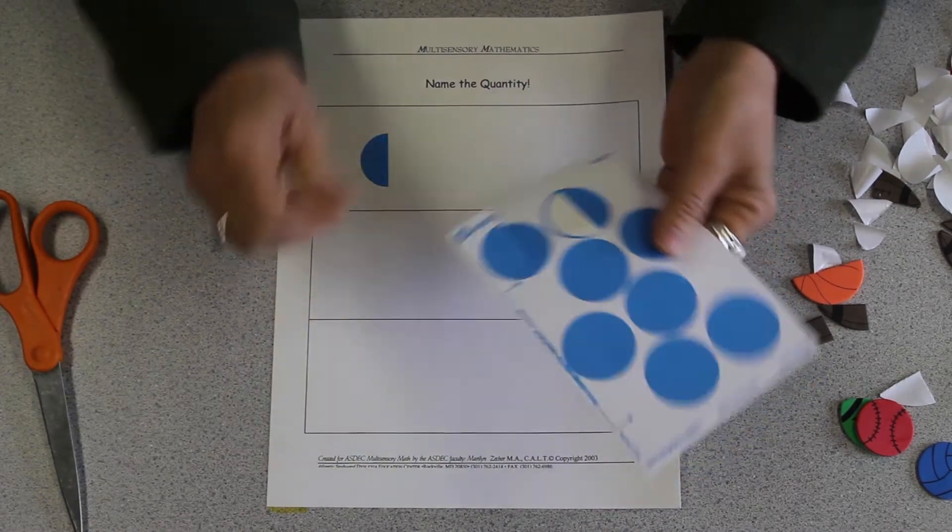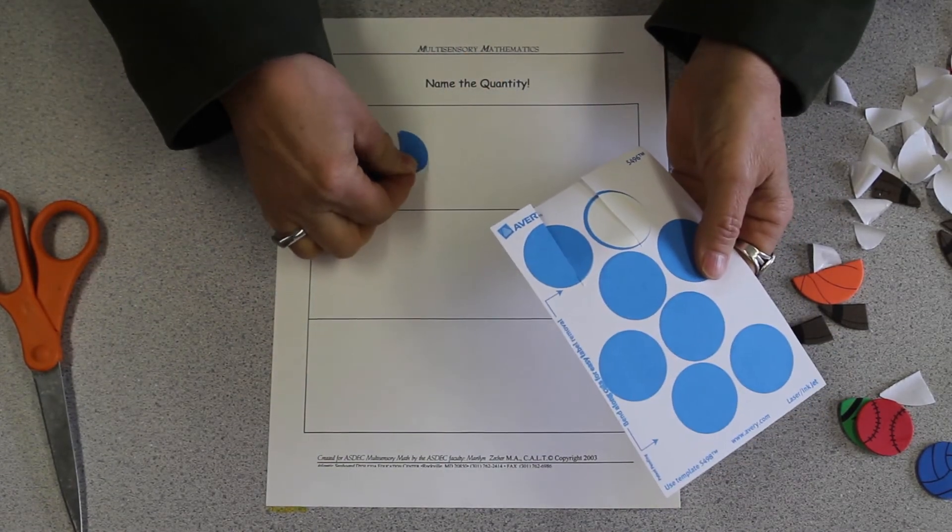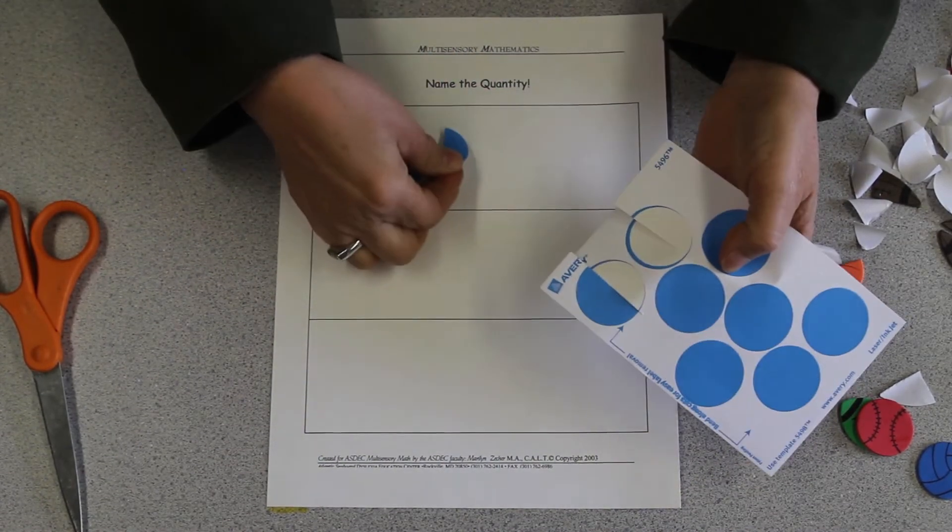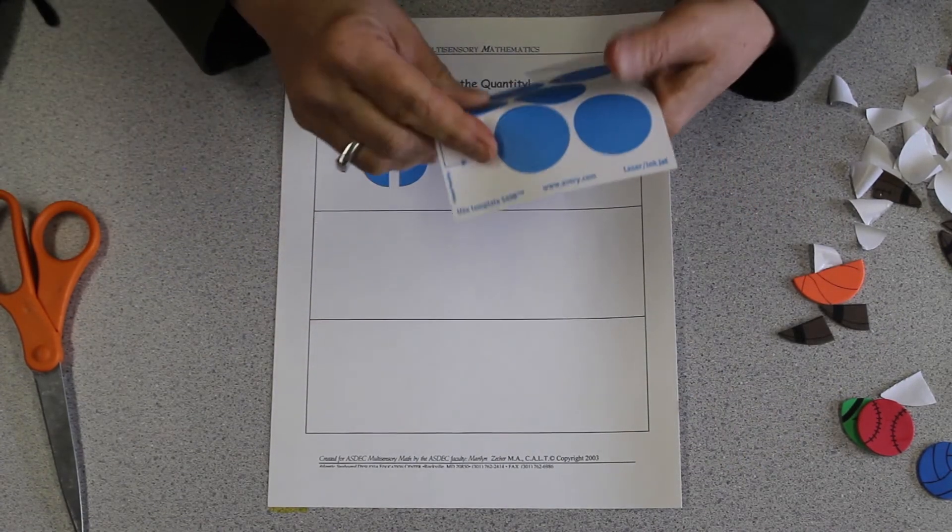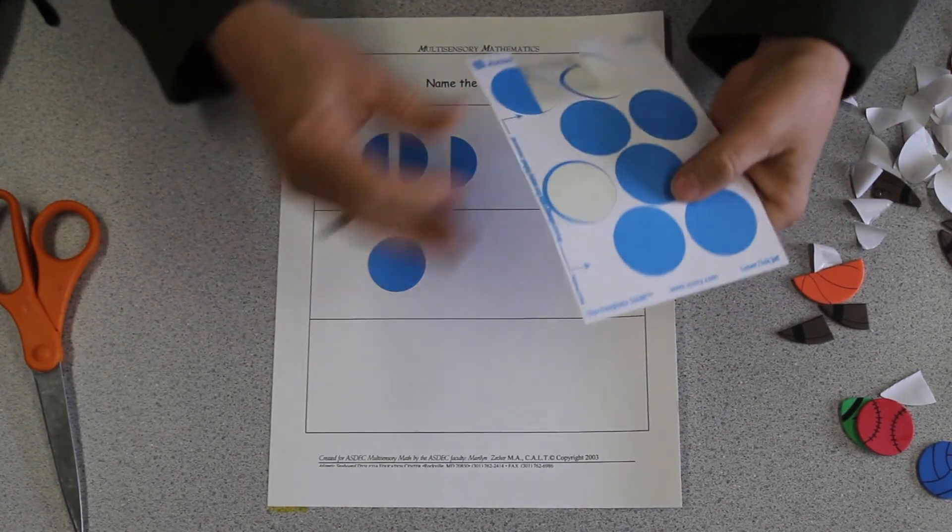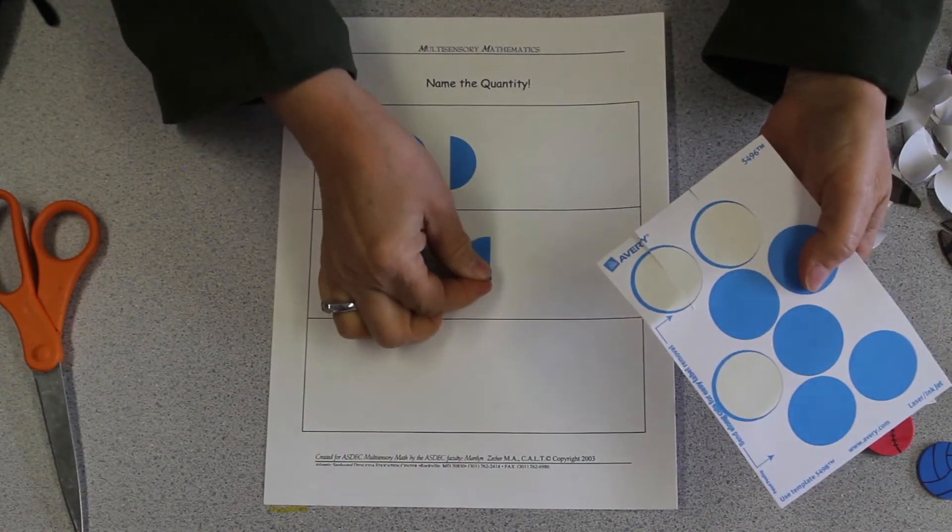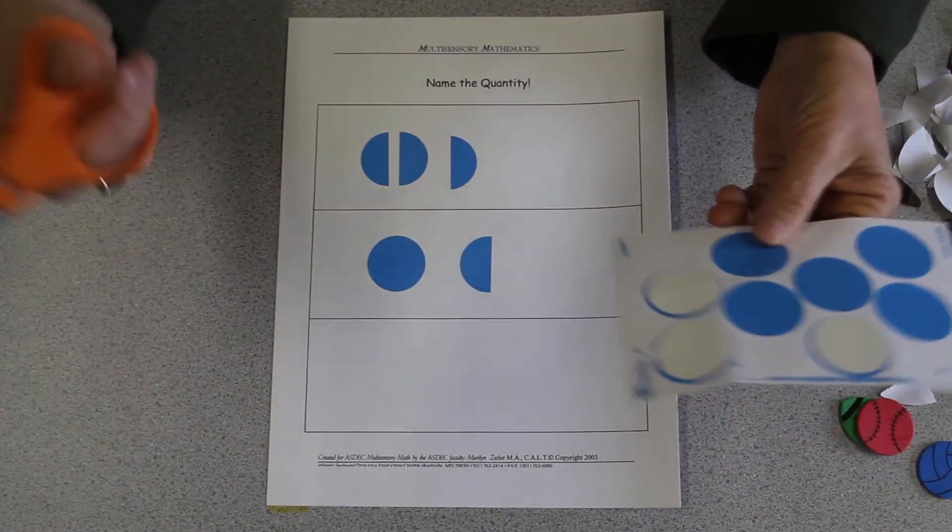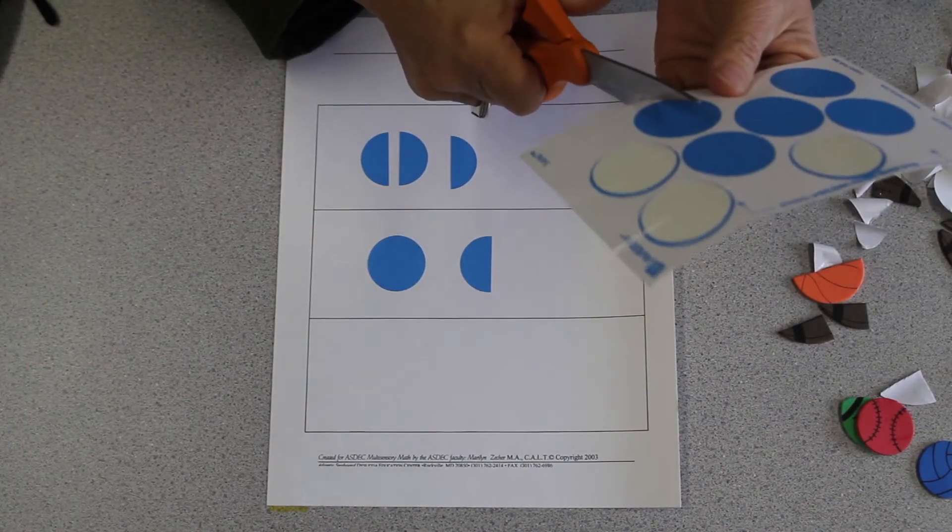By putting it down, I can show an improper fraction. I can show a mixed number. I can actually show just a fraction itself.